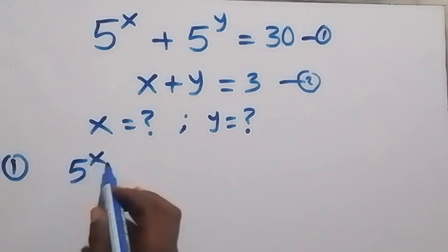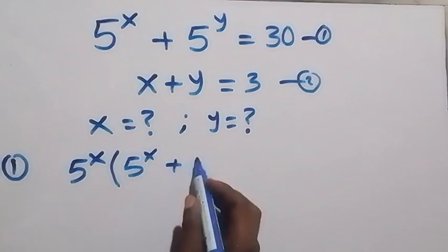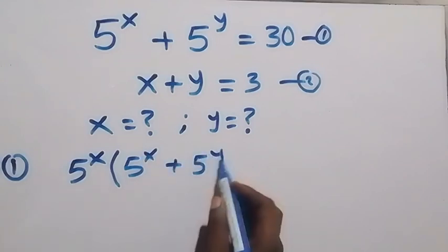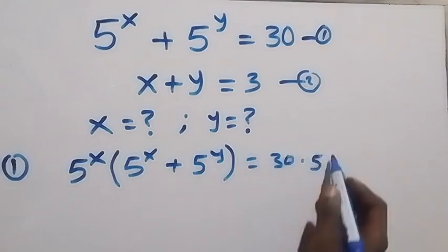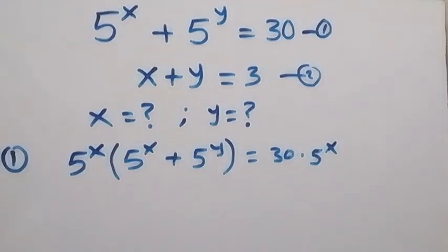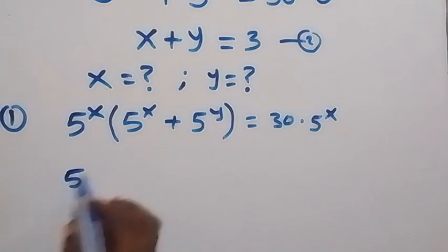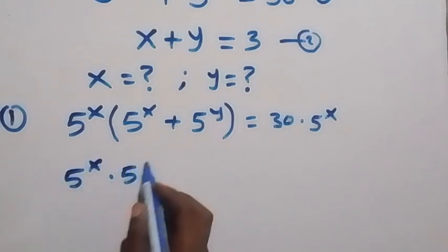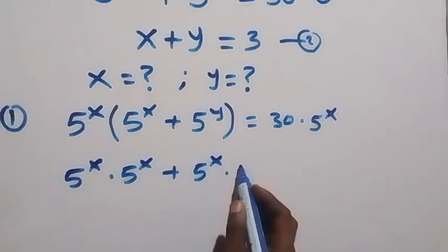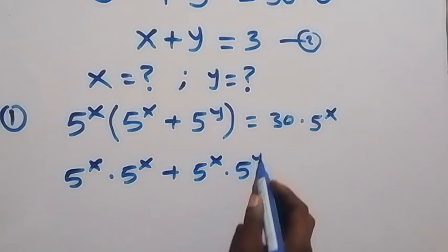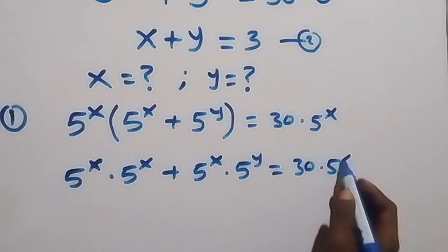This gives us 5 raised to power x multiplied by 5 raised to power x, plus 5 raised to power x times 5 raised to power y, which equals 30 multiplied by 5 raised to power x. We can open this bracket to get 5^x times 5^x plus 5^x times 5^y equals 30 times 5^x.